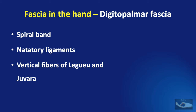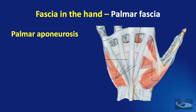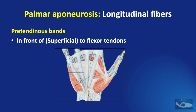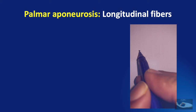We commonly refer to this palmar fascia as the palmar aponeurosis. This is not just a flat sheet of fascia, but a three-dimensional structure. It has longitudinal, transverse, and vertical components. The longitudinal fibres consist of the pre-tendinous bands — that is, the part of the fascia that runs in front of or superficial to the flexor tendons. These longitudinal fibres are not just static sheets of fascia, but they have two important attachments.